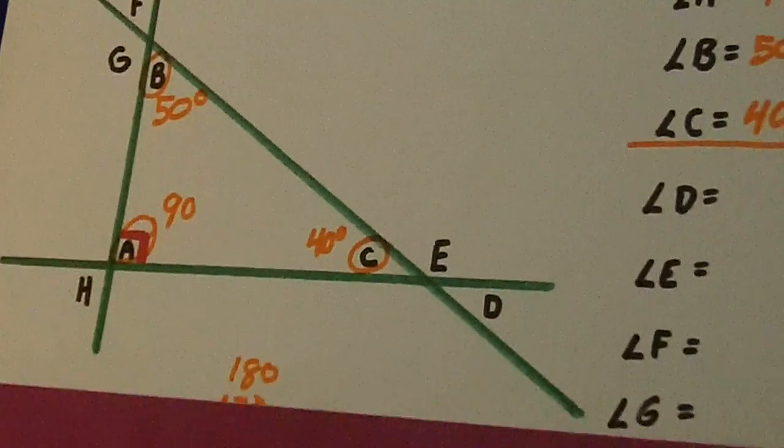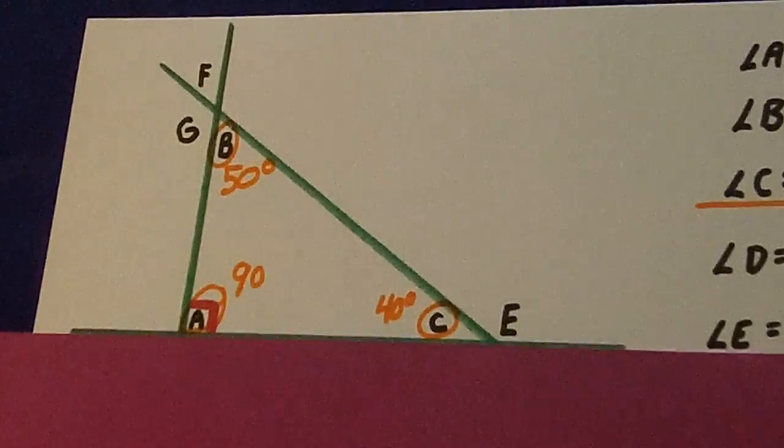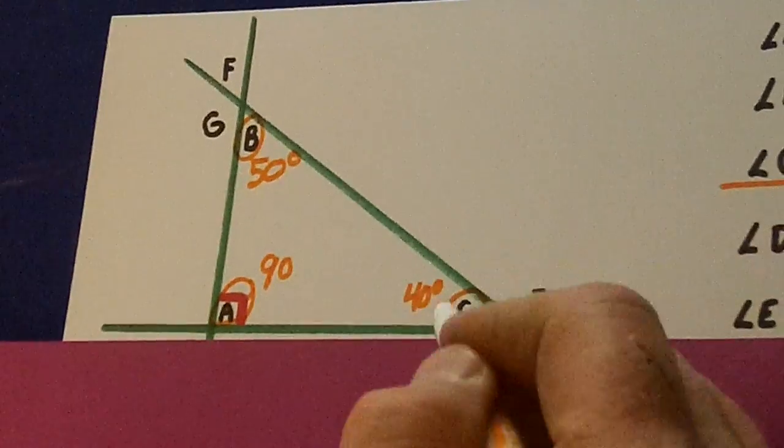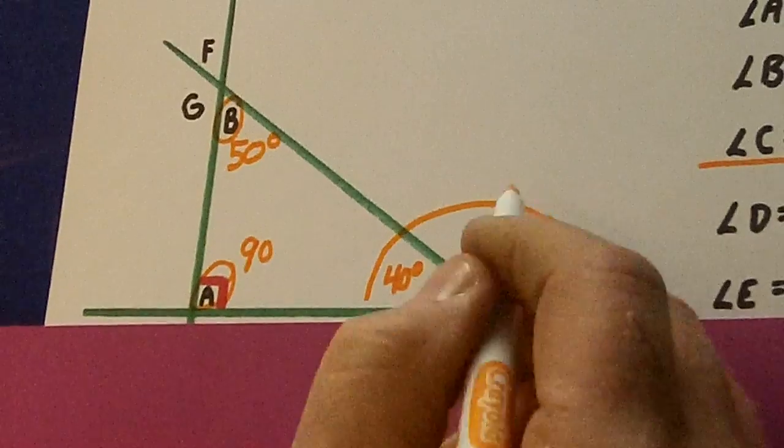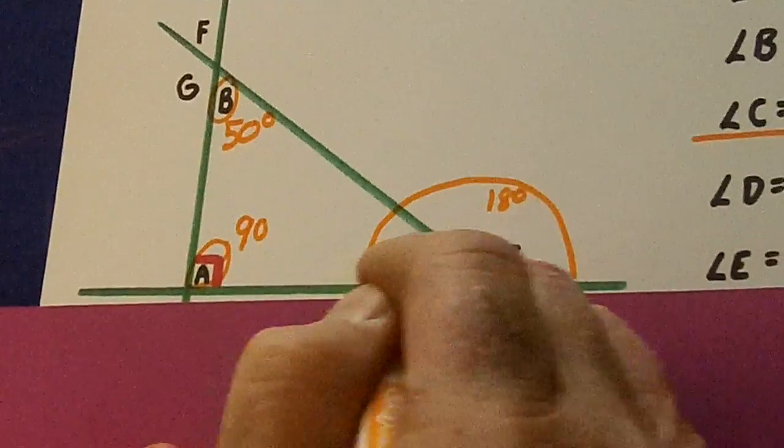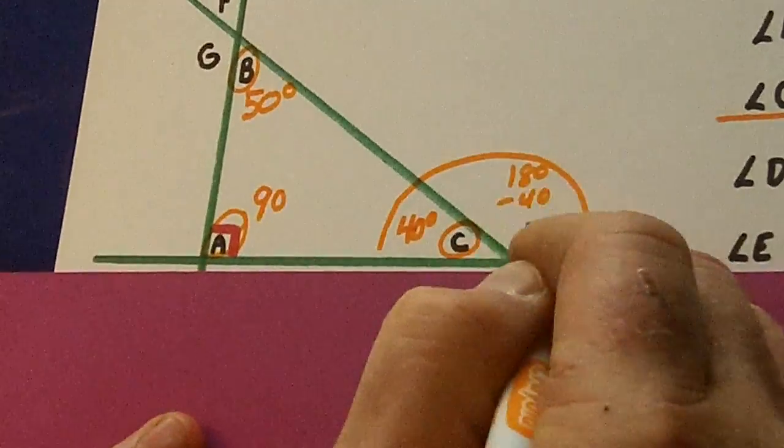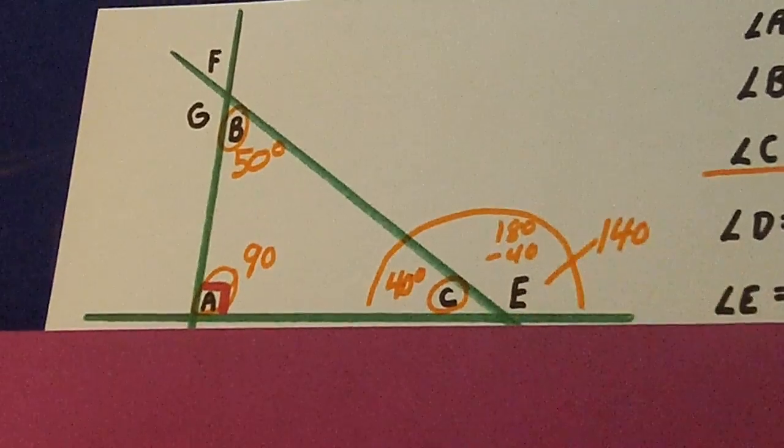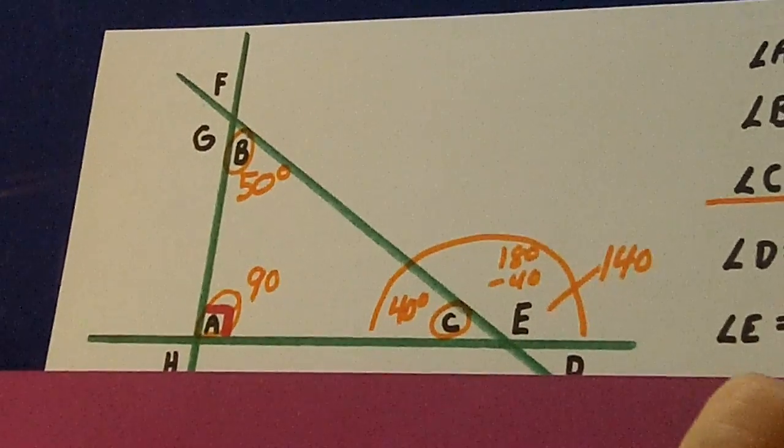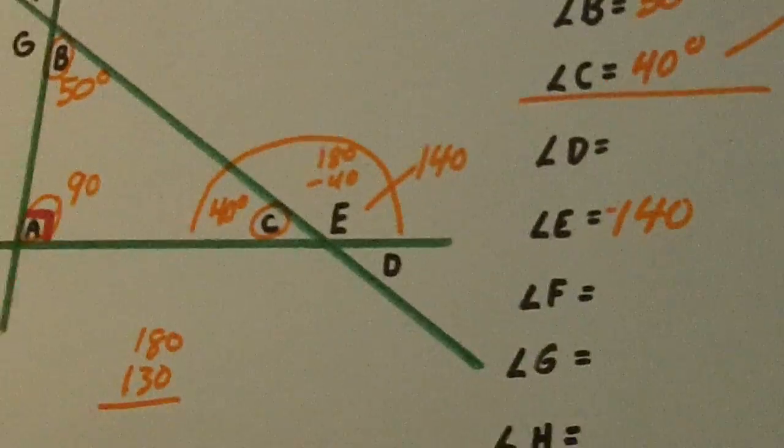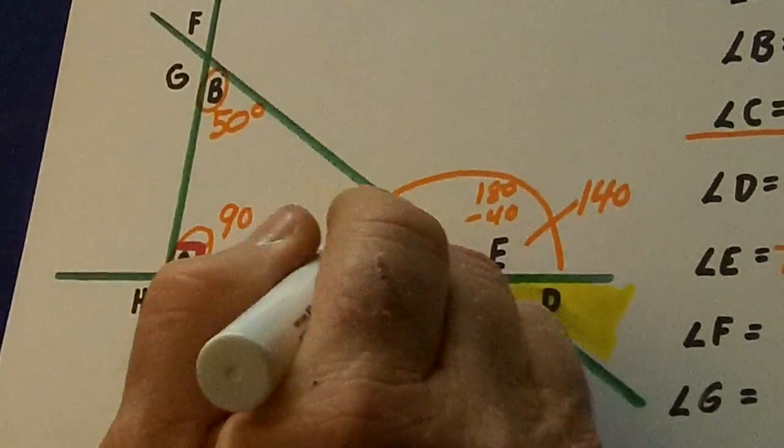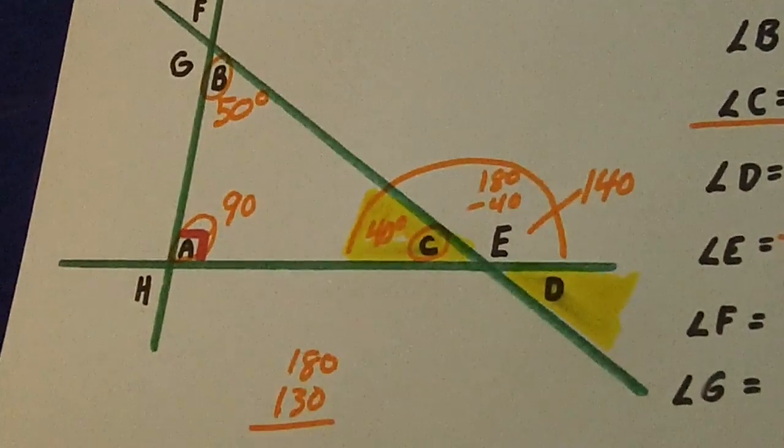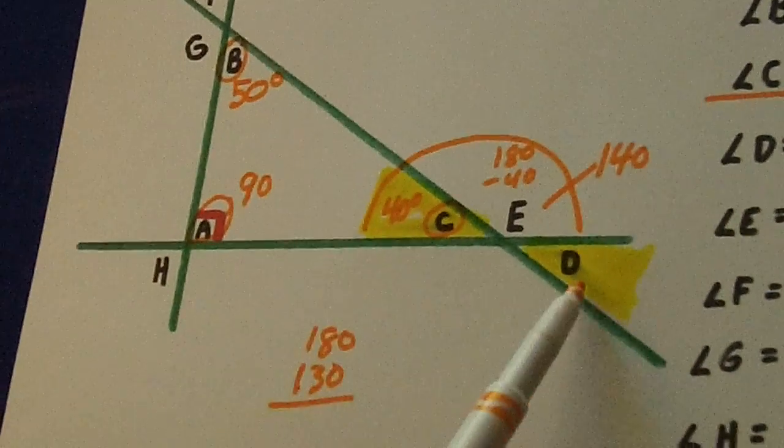Let's do this stuff again here. Look at this. C and E are supplementary. So 180 minus 40, E is 140. And what tells us what D is? D is the vertical angle to C. If C is 40, D is 40.